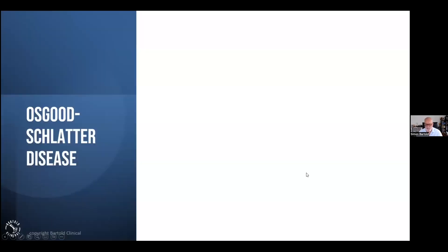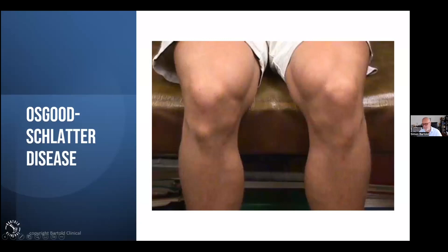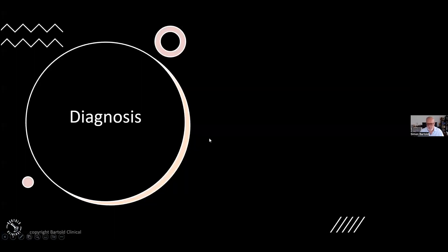If we have a look at Osgood-Schlatter's disease — here's a very typical picture. You can see the difference between the two knees. We've got some hypertrophy of the tibial tuberosity here as a result of the traction nature of Osgood-Schlatter's disease in this individual. That's a pretty typical physical finding of this disease. The diagnosis is clinical, so you don't need to irradiate these people or do advanced investigation of these people.